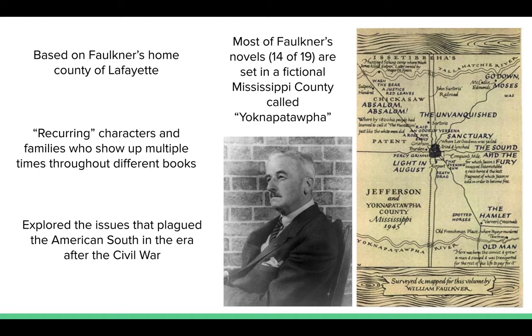This is one of the most unique qualities of Faulkner's bibliography: the fictional yet highly realistic world he created. Over the course of Faulkner's 14 novels and many more short stories set in Yoknapatawpha, he creates a living, breathing world with recurring characters, places, and families — all of whom Faulkner used to explore the issues that plagued his homeland in the American South.